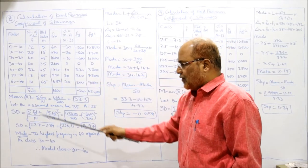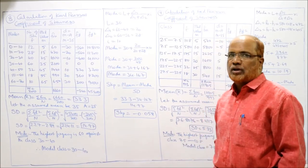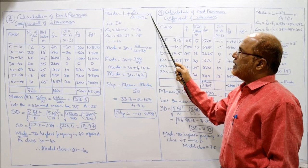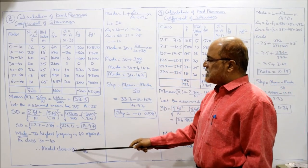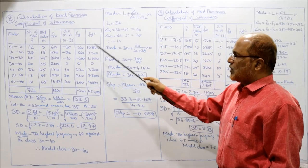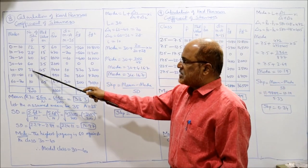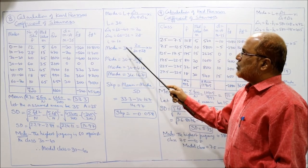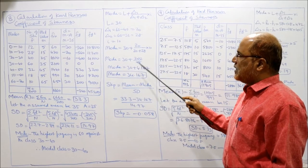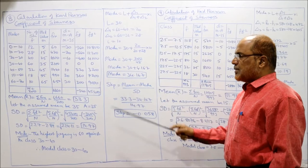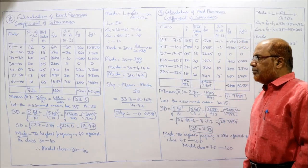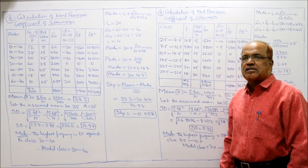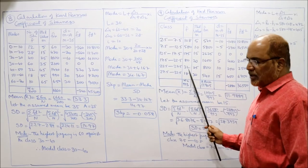Mode = L + Δ1/(Δ1+Δ2) × i. L=30, Δ1 = 60−40 = 20, Δ2 = 60−32 = 28, i=10. Mode = 30 + (20/48)×10 = 34.167. SKP = (Mean − Mode)/SD = (33.3 − 34.167)/14.97 = −0.058. This is the end of problem number 8.